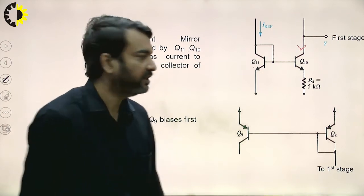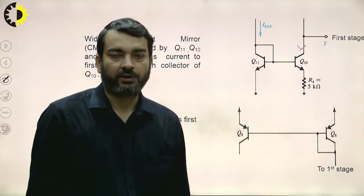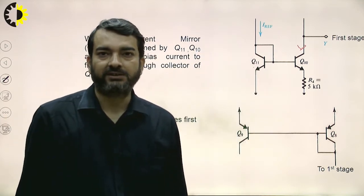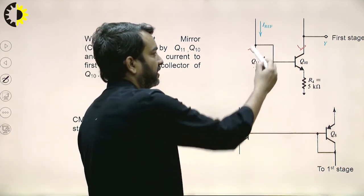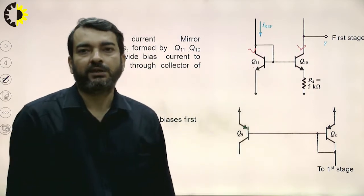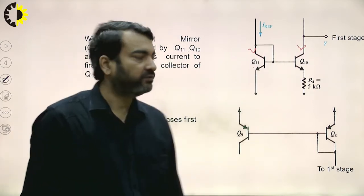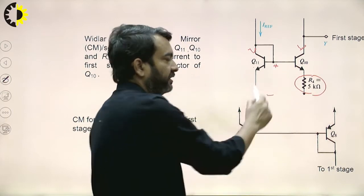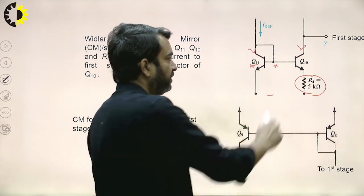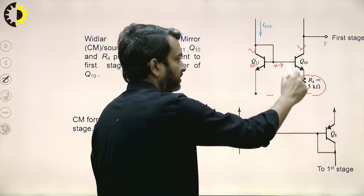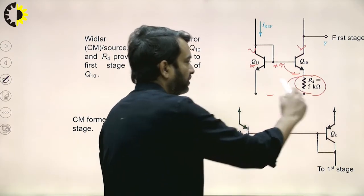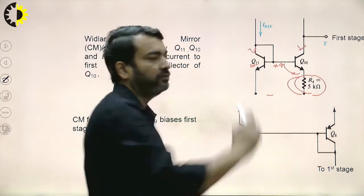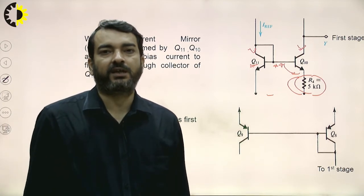In conventional current mirrors there is no resistance. If both transistors Q10 and Q11 are matched, their collector currents will be equal. In the Widlar current source, the base-to-emitter voltage of transistor Q11 is divided into two parts: the base-emitter voltage of transistor Q10 and the voltage drop across resistance R4. So the collector current of Q10 will not be equal to the collector current of Q11, even if the transistors are matched.